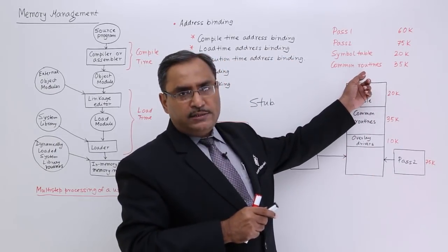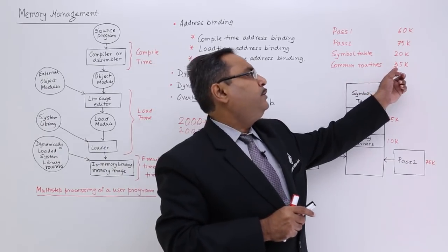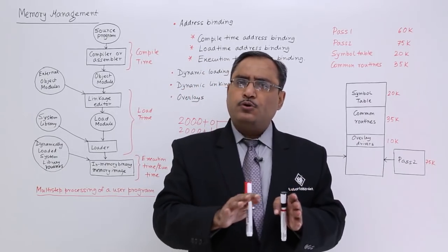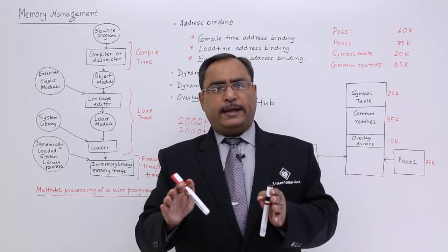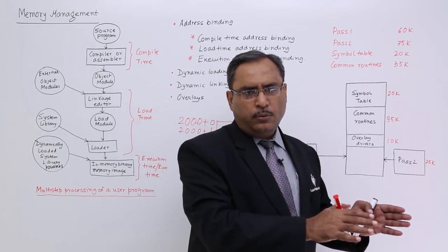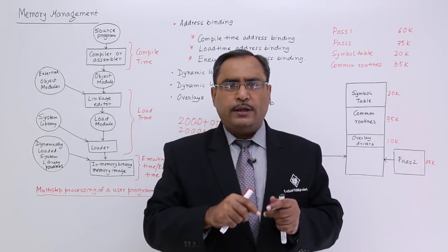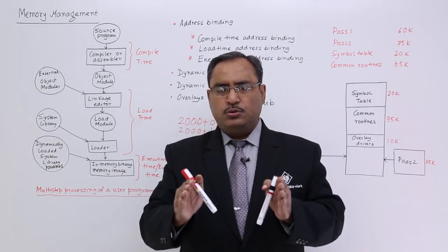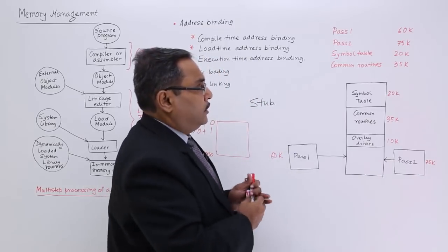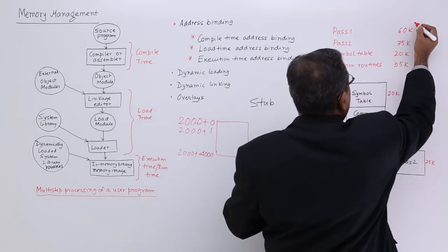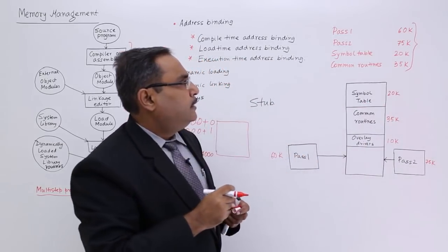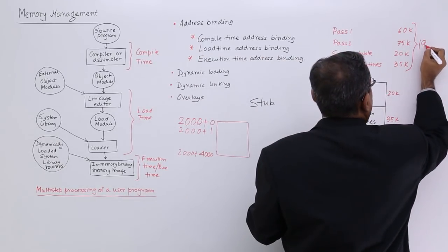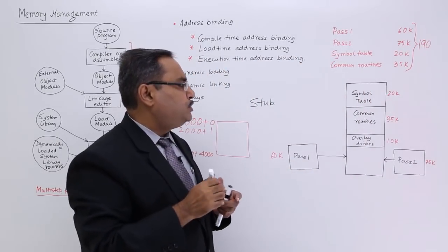There are some common routines which will be accessed by both pass 1 and pass 2, taking 35 KB. Pass 1 executes first, then pass 2 executes — when pass 1 is executing, pass 2 has no role, and when pass 2 executes, pass 1 has no role. So if we execute this program, the total memory space required is 35 plus 75 plus 60 plus 20, which equals 190 KB.